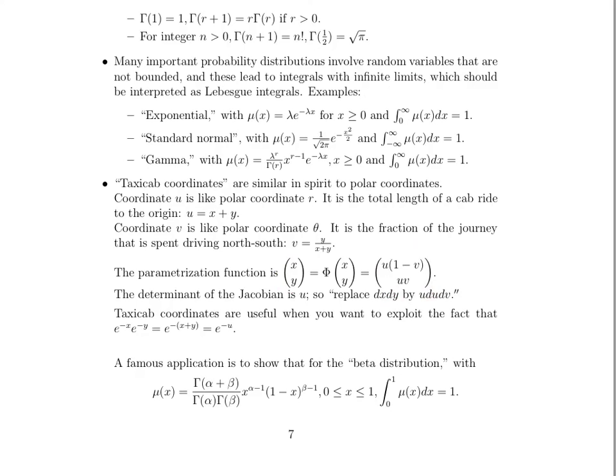And taxicab coordinates are extremely useful, because look at how nicely a sum of X and Y simplifies, especially when you're using exponential functions. And of course, sort of looping back, taking a look at these gamma distributions, a famous application is to show that for the beta distribution, which does involve some of the gammas that we were talking about, we can really simplify this quite nicely. What would have been an overwhelming number of exponential functions can just be expressed as the integral from 0 to 1 of mu of X being equal to 1, once you simplify all this down. There will be a problem where we go into this in much greater detail, both in lecture as well as in the small group problems.